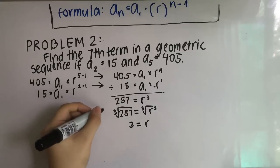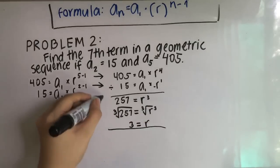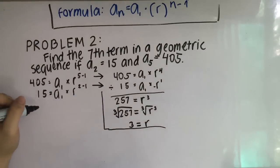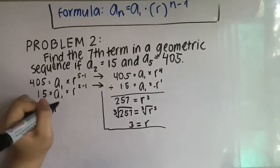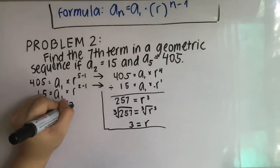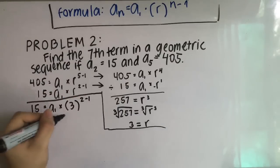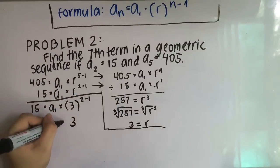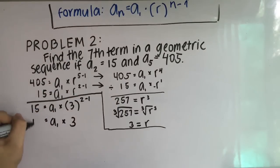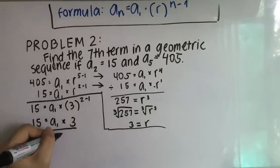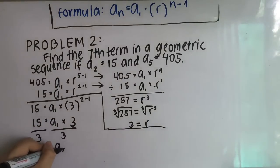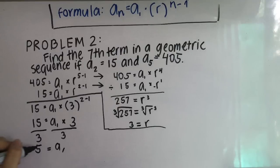Now that we have our common ratio, we are going to solve for the first term. We plug in: 15, which is the second term, is equal to a sub 1 multiplied by 3, the common ratio, raised to 2 minus 1. Once we evaluate that, we have 15 is equal to a sub 1 multiplied by 3. Next, we isolate a sub 1 by dividing 3 on both sides. 15 divided by 3 is 5. So 5 is our a sub 1, or our first term.